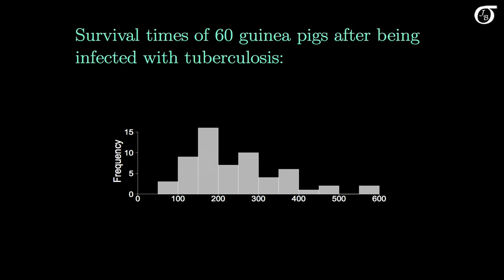Let's return to the guinea pig survival time data. And here's the histogram again. The class in the histogram that has the greatest number of observations is sometimes called the modal class. So this class here, the 150-200 class, is the modal class for this data.